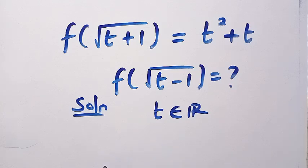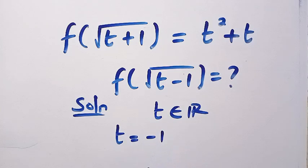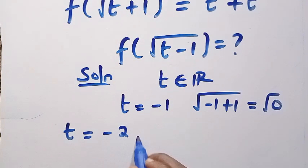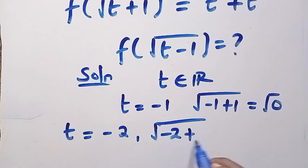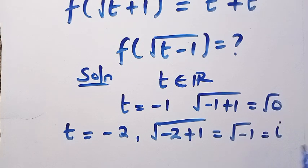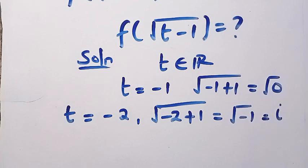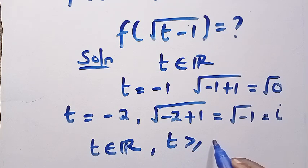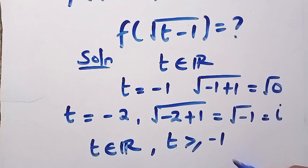If I let t equal 0, this is still valid. If I let t equal 1, it's still valid. What if I let t equal minus 1? We are going to have the square root of minus 1 plus 1, so that is square root of 0, and this is still valid. But if I let t equal minus 2, that is where the problem falls. Because minus 2 plus 1 gives us square root of minus 1, and this is not a member of the real numbers, because square root of minus 1 is i, which is a complex number. So to cut the story short, t must be greater than or equal to minus 1.